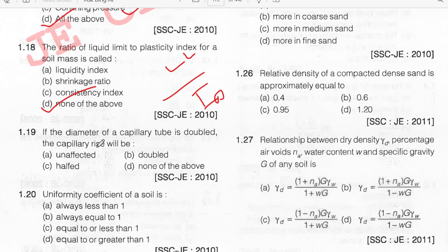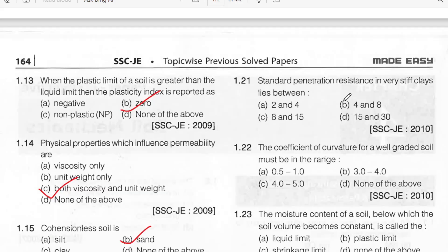Uniformity coefficient of soil is always greater than or equal to 1. Option D. The standard penetration resistance in very stiff clay lies between 15 to 30.